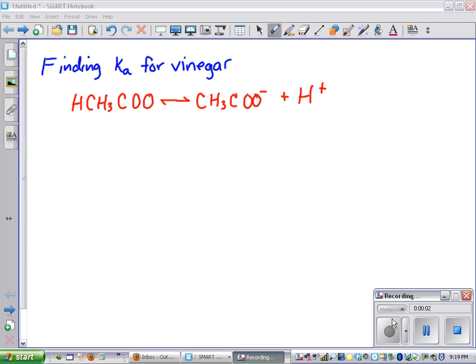This is an explanation of how you find Ka for vinegar in the laboratory using a titration. The formula for dissociation of vinegar, which is acetic acid, this is acetic acid, is acetic acid dissociates into acetate plus H+.